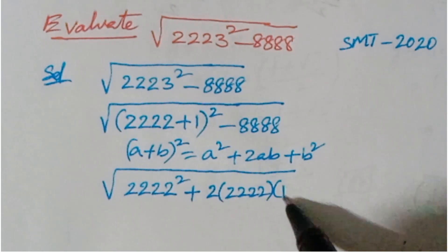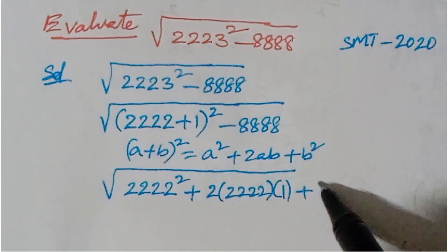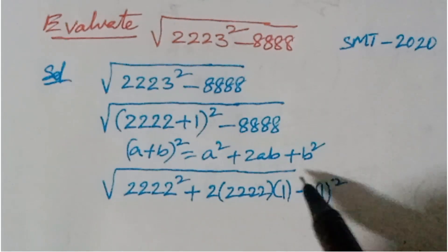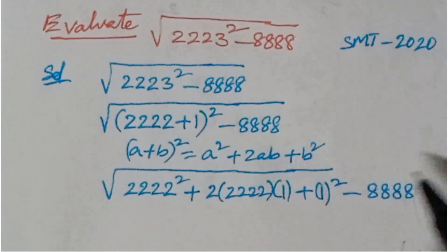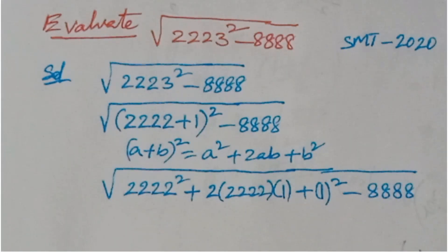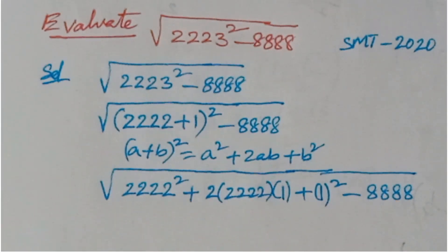What you'll get here: a squared plus 2ab, a squared means 2222 squared plus 2ab, 2 into 2222 into 1 plus b squared means 1 squared minus 8888. So here you are applying the formula a plus b whole square.